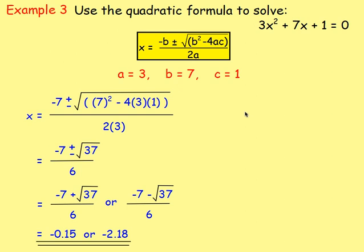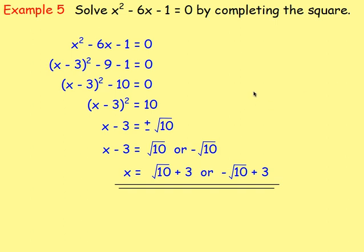You can also solve using the quadratic formula: x equals negative b plus or minus the square root of b squared minus 4ac, all over 2a. Write down the coefficients a, b, and c, and sub them into the quadratic formula to get the solutions.